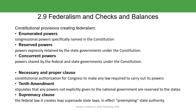The Tenth Amendment stipulates that powers not explicitly given to the national government are reserved for the states. The supremacy clause — the most important — means that federal law is allowed to supersede or prevent any state authority. So if a state tries to do something outside of federal law, the federal government has the right to supersede their laws.